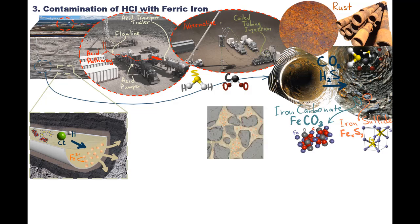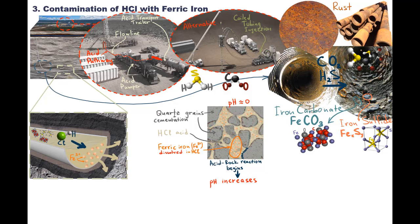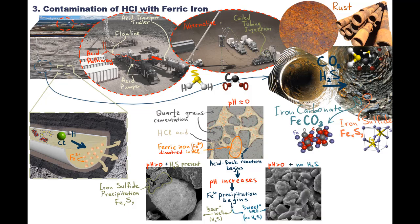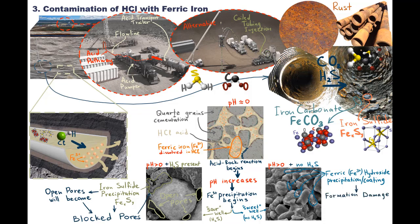Next, acid with iron moves into the reservoir. Initially, pH is still close to zero and ferric iron will remain dissolved and will not cause any problems. However, once HCl starts reacting with the rock, pH will increase and ferric iron will precipitate. In sour wells — those containing hydrogen sulfide — ferric iron will precipitate as iron sulfide. In sweet wells, or wells that do not contain hydrogen sulfide, ferric iron will precipitate as ferric hydroxide. These precipitates can cause significant formation damage, blocking pore spaces between grains of quartz in a sandstone reservoir and restricting the flow of hydrocarbons.